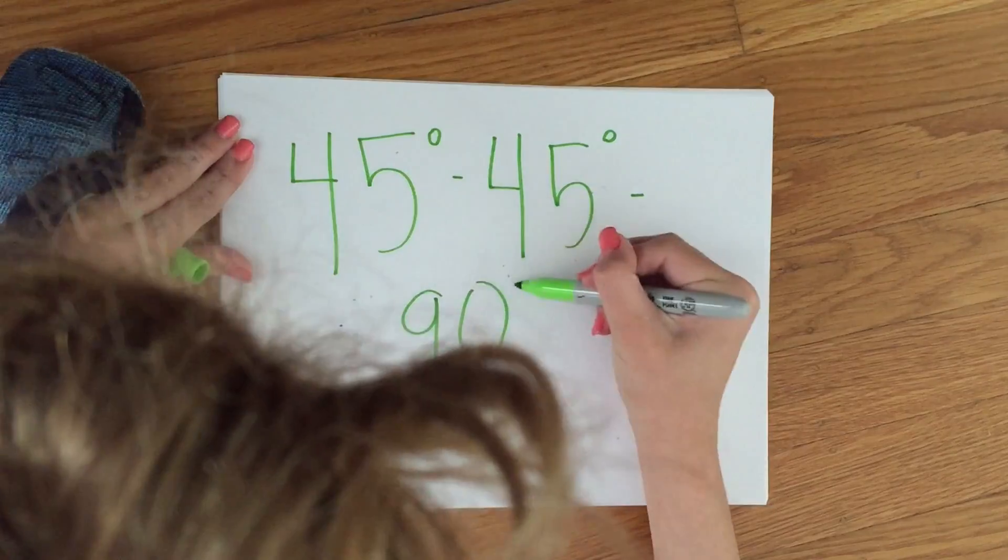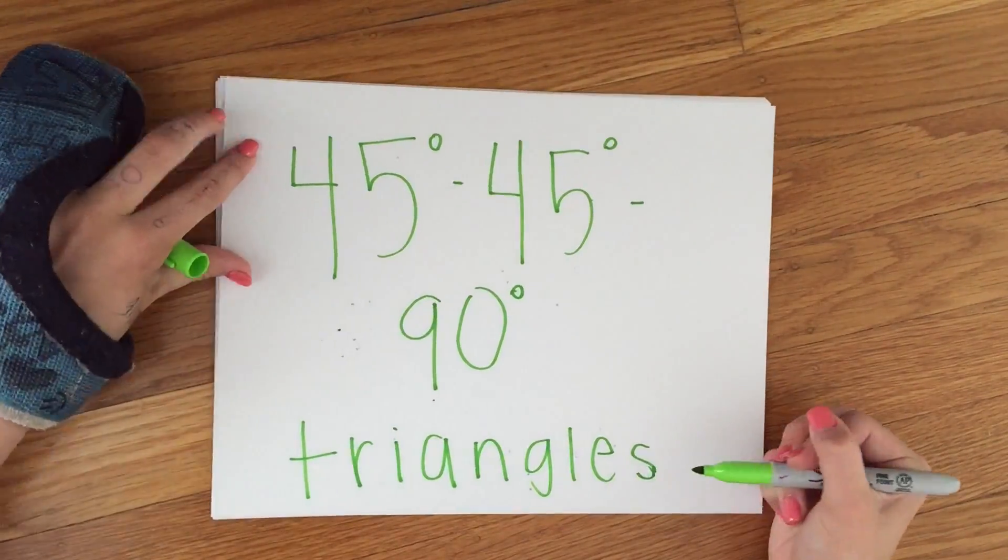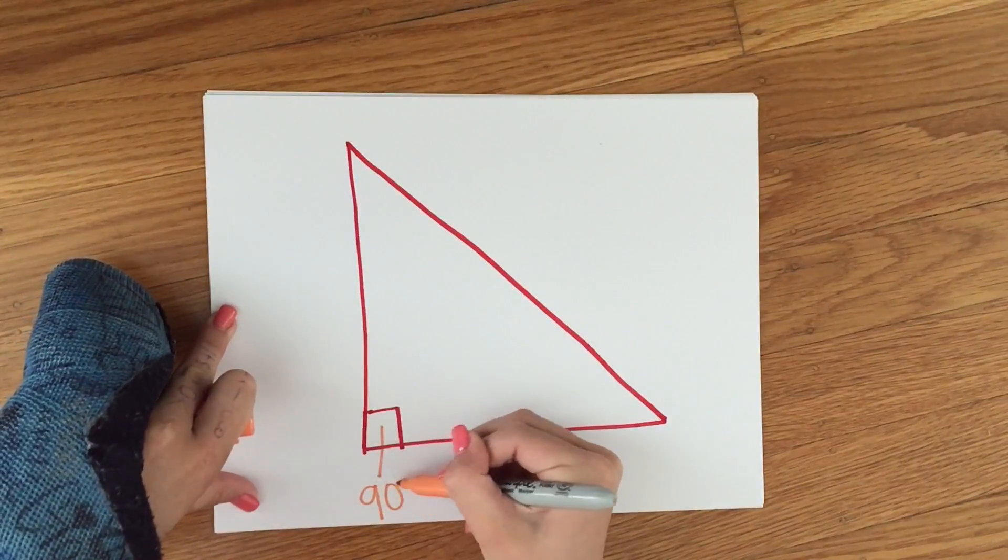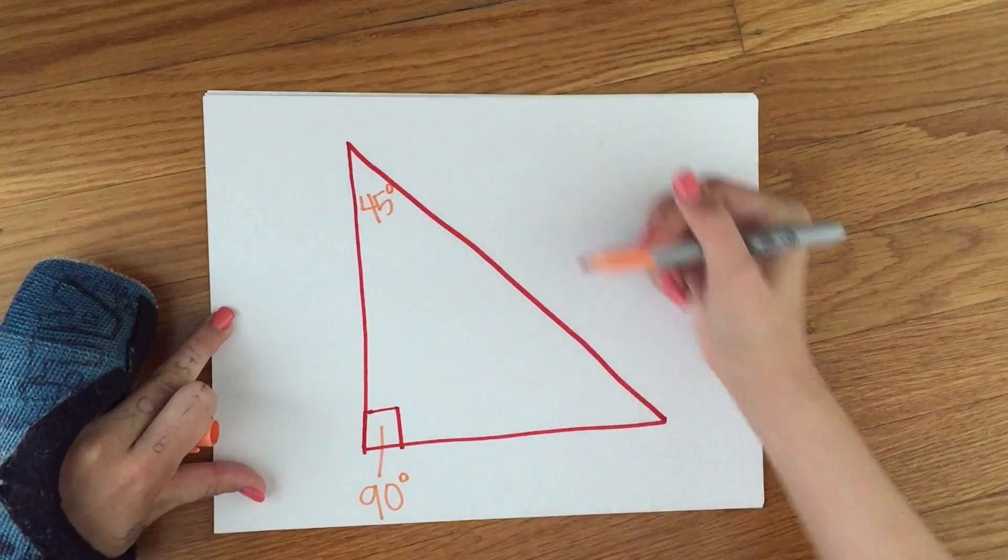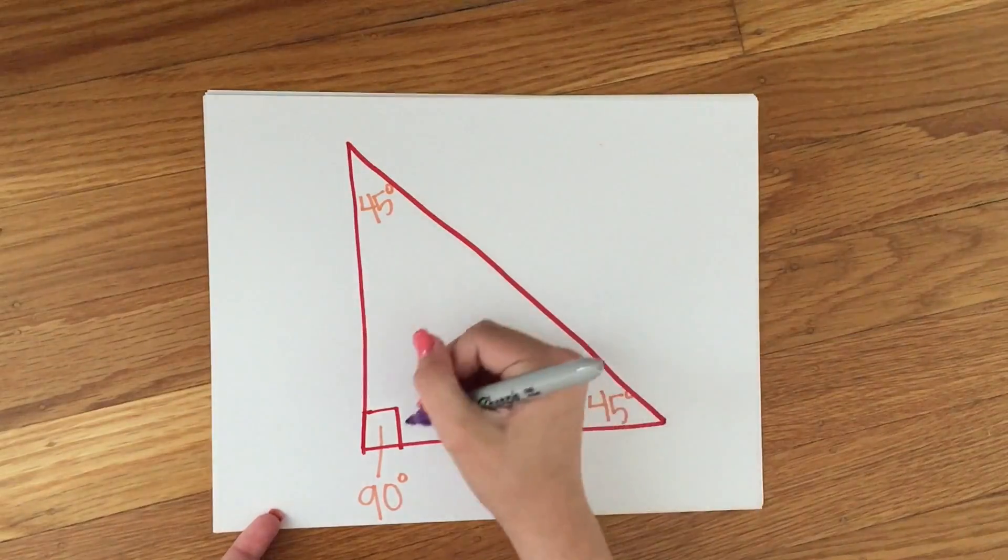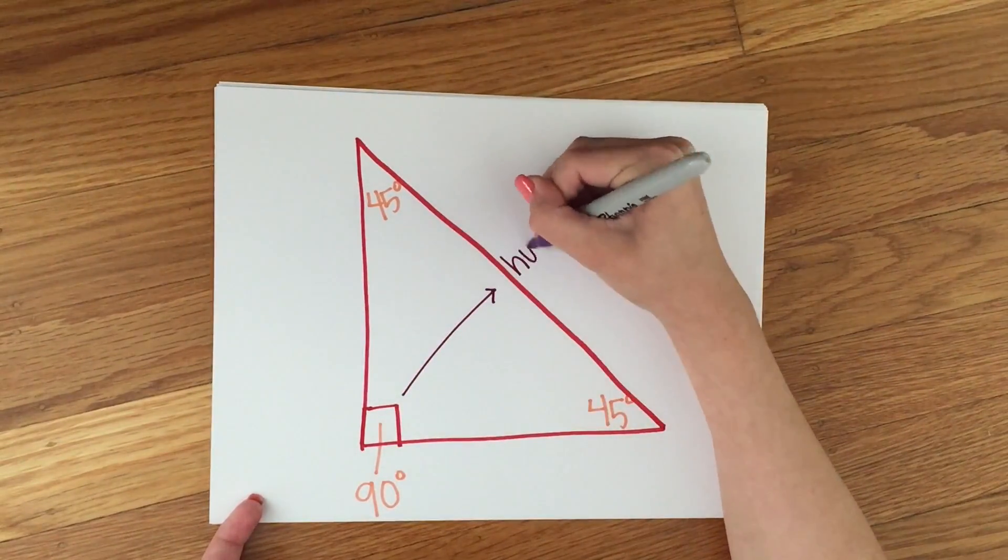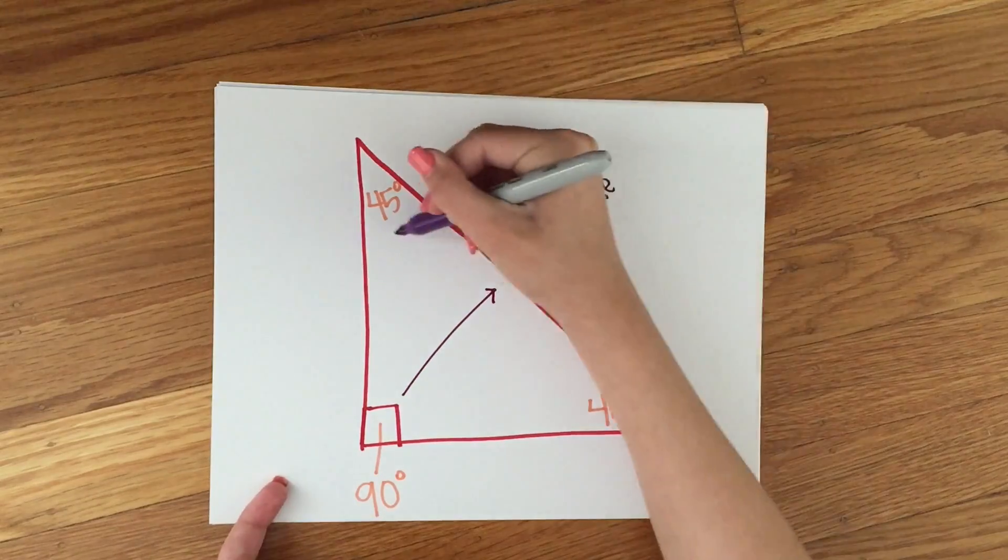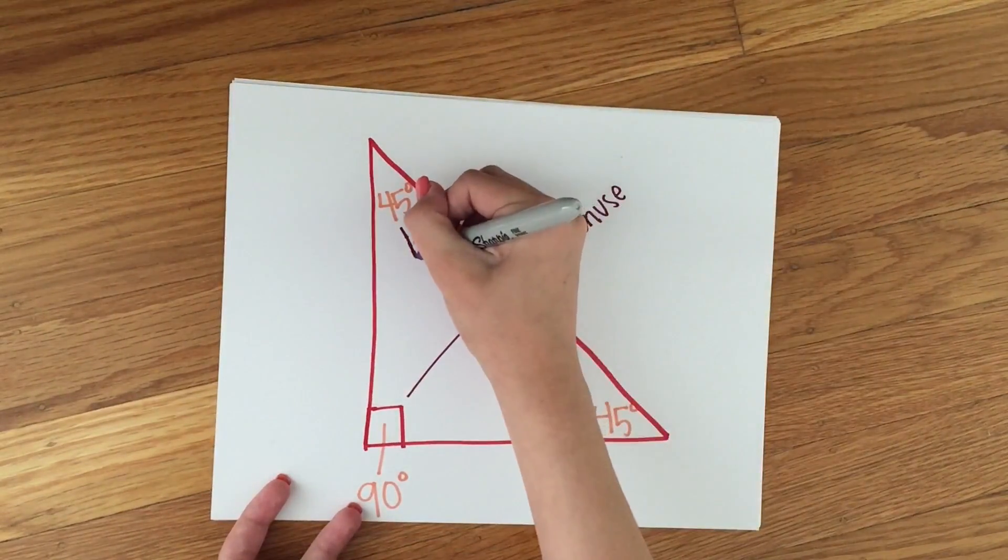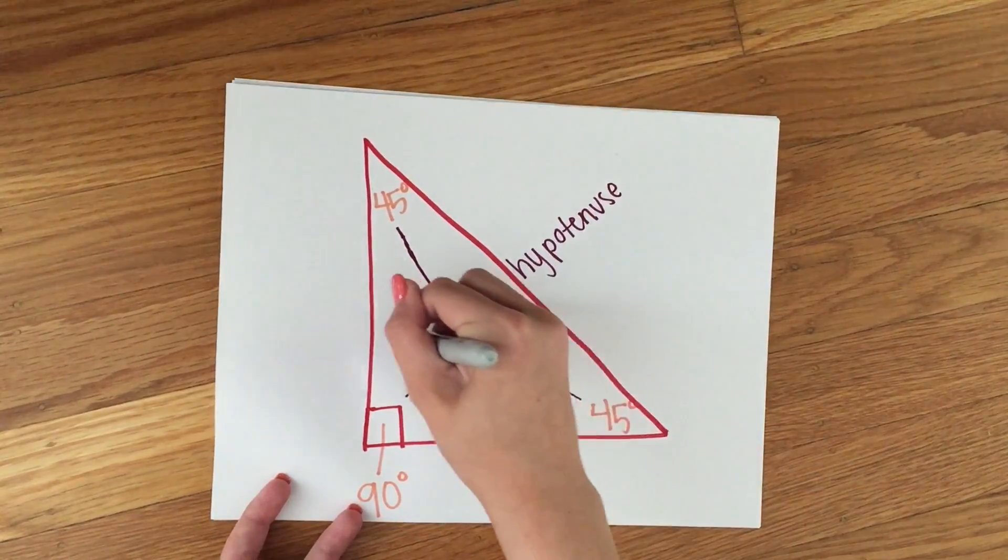The next special triangle is a 45-45-90 triangle. These triangles have two 45-degree angles and one 90-degree angle. The side opposite of the 90-degree angle is called the hypotenuse, and the sides opposite of the 45-degree angles are called legs.